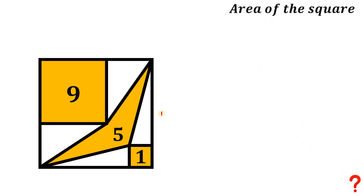Given this big square and those areas, our goal is to find the area of the big square. Now let's use the given information to answer this. Since this square has an area of 9, therefore all of its sides must be equal to 3. So we know this side is 3. And the side length of this small square with an area of 1 is 1 unit, of course.